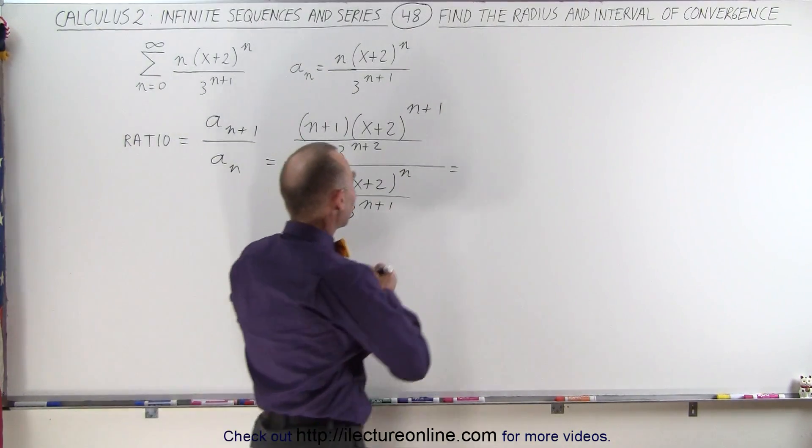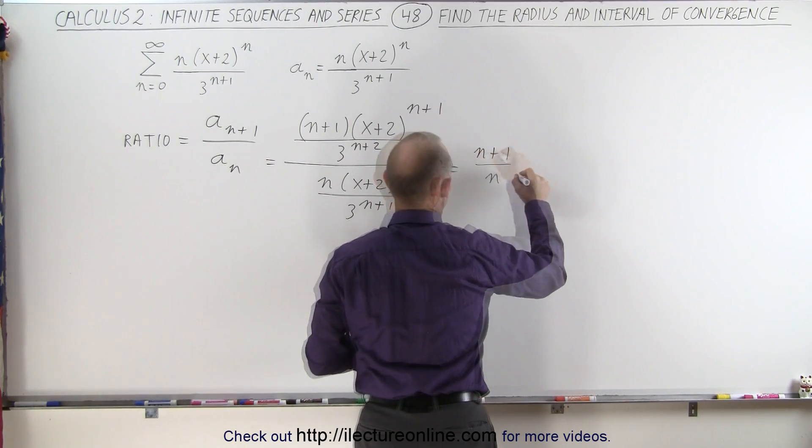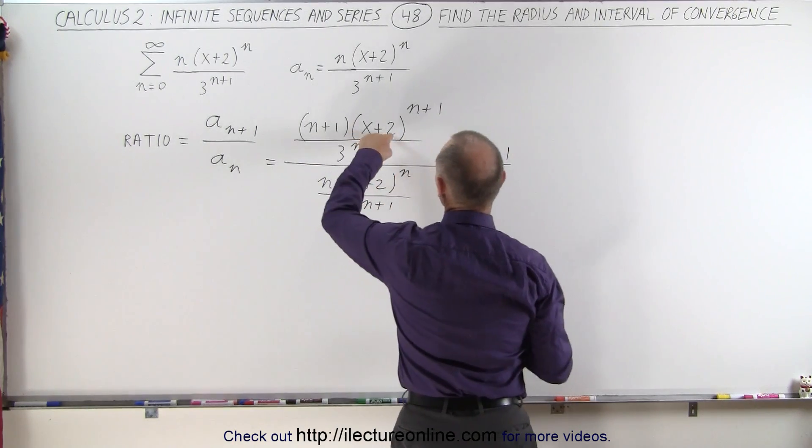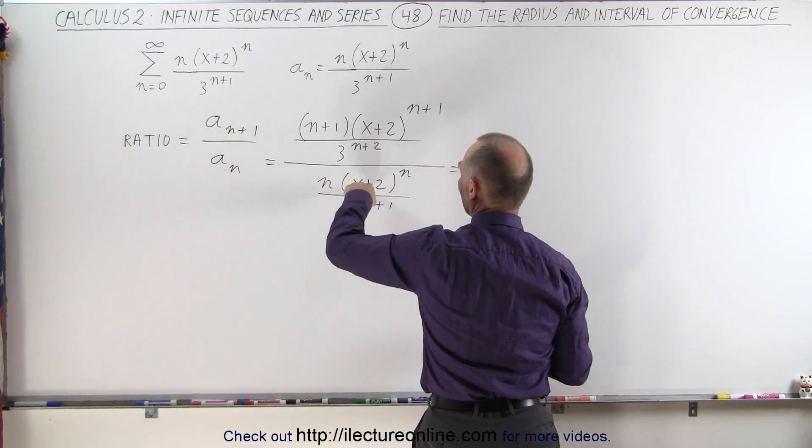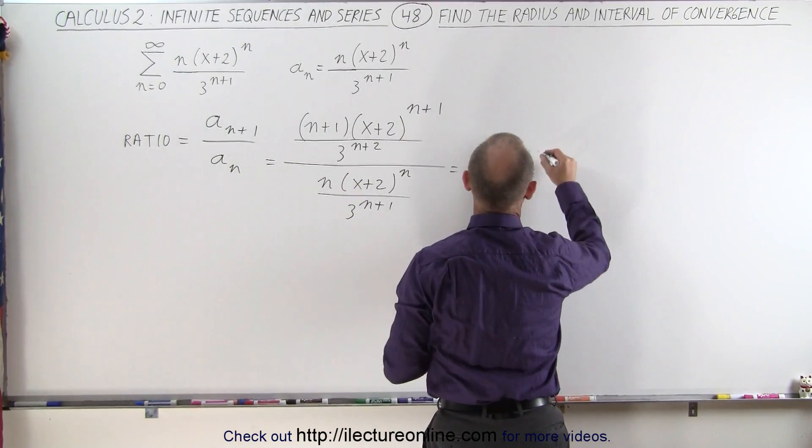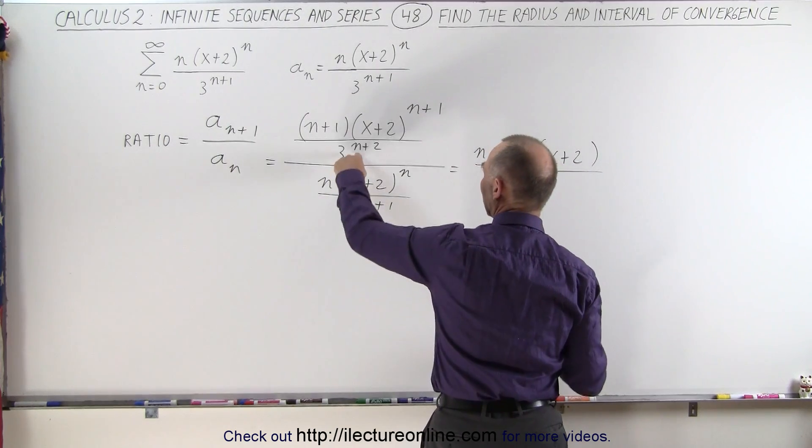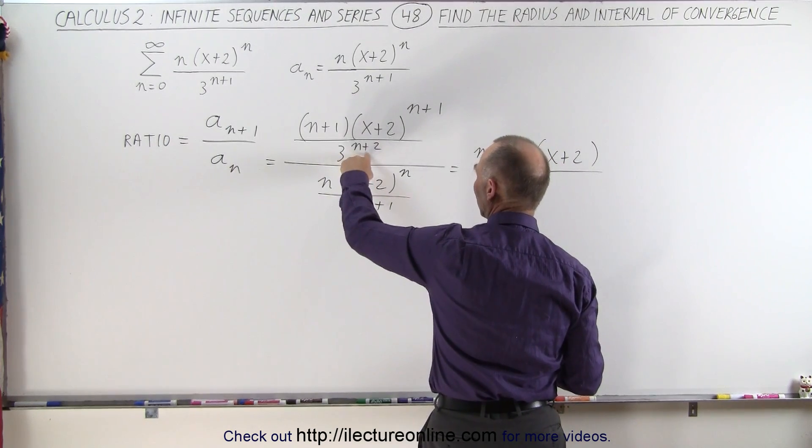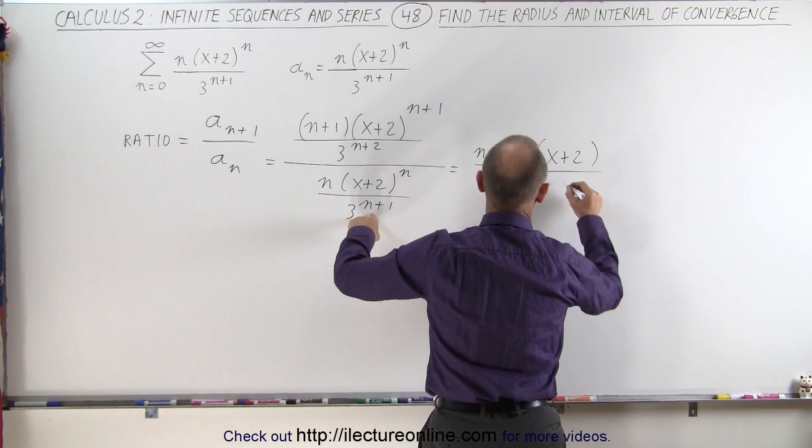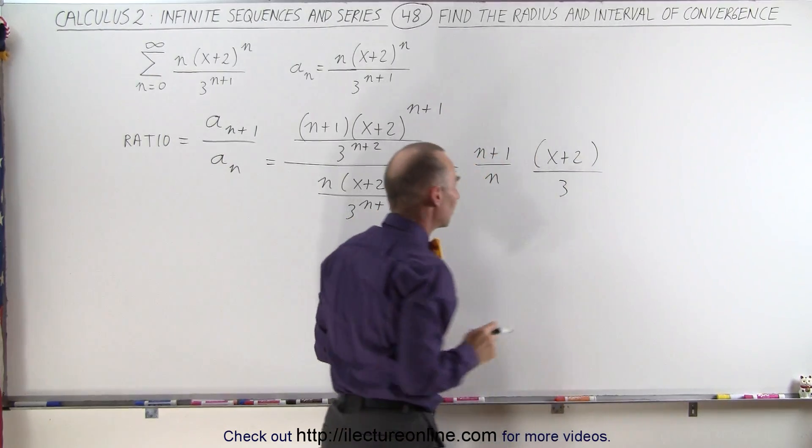We have (n+1) divided by n times (x+2) to the (n+1) divided by (x+2) to the n. Simply subtract exponents, we get (x+2) in the numerator divided by, here again we subtract exponents, n+2 minus n+1 is simply 1, 3 to the 1 power.